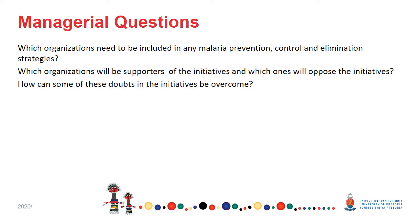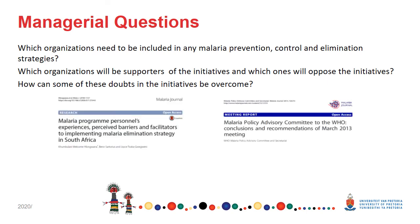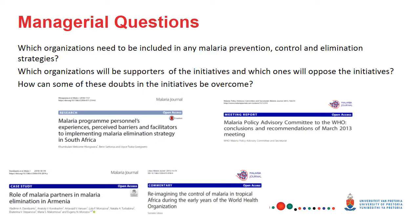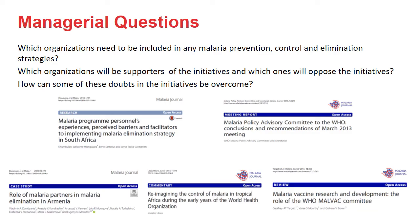When you know that, you might say: I understand how big the problem is and I know what the underlying factors are — but now I want to know who are the people that are going to be involved. Here your managerial questions might centre around which organisations need to be included in these different strategies, what organisations would support you, what organisations would oppose the initiatives, and how can some of these doubts be overcome? Some of the role players you could look at are malaria programme personnel, advisory committees from the WHO, or other role players in a specific country. You can even look at changes in the WHO over time — what they have done that has worked and what has not. Or you can look at organisations developing vaccines, because these will have a vested interest in malaria prevention, control, and ultimately elimination, and would support your initiatives.